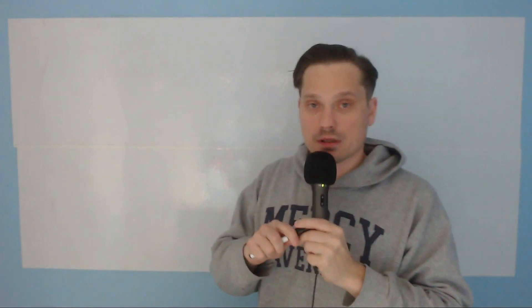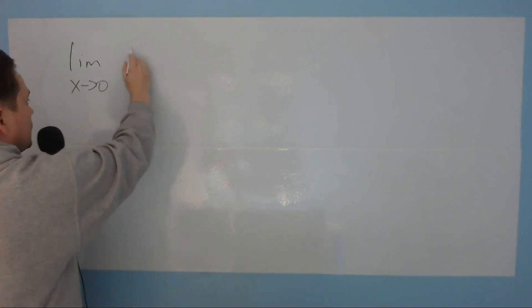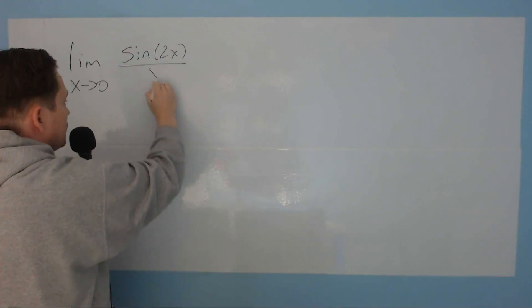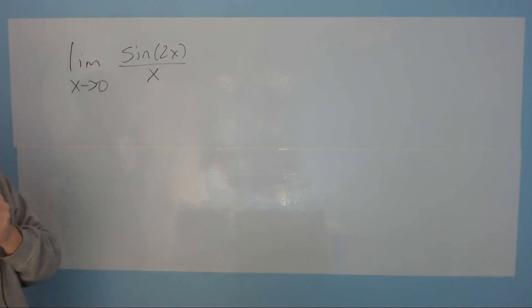Let's take a look here at finding a couple limits that look like this. Take a look. So the first one will have this form: limit as x approaches 0 of sine of 2x over x. That's our goal.